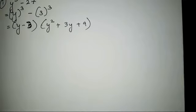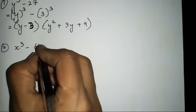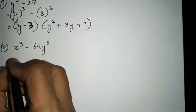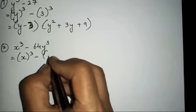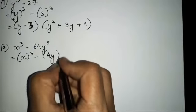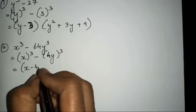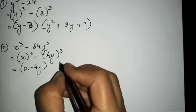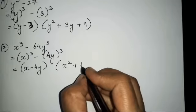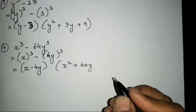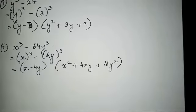Now the second sum — it is very easy, so let's not waste time because the next questions are quite tricky. Here y cube — a is x and b is 4y, so x minus 4y. Now a square means x square, and a into b means 4xy plus 16y square.